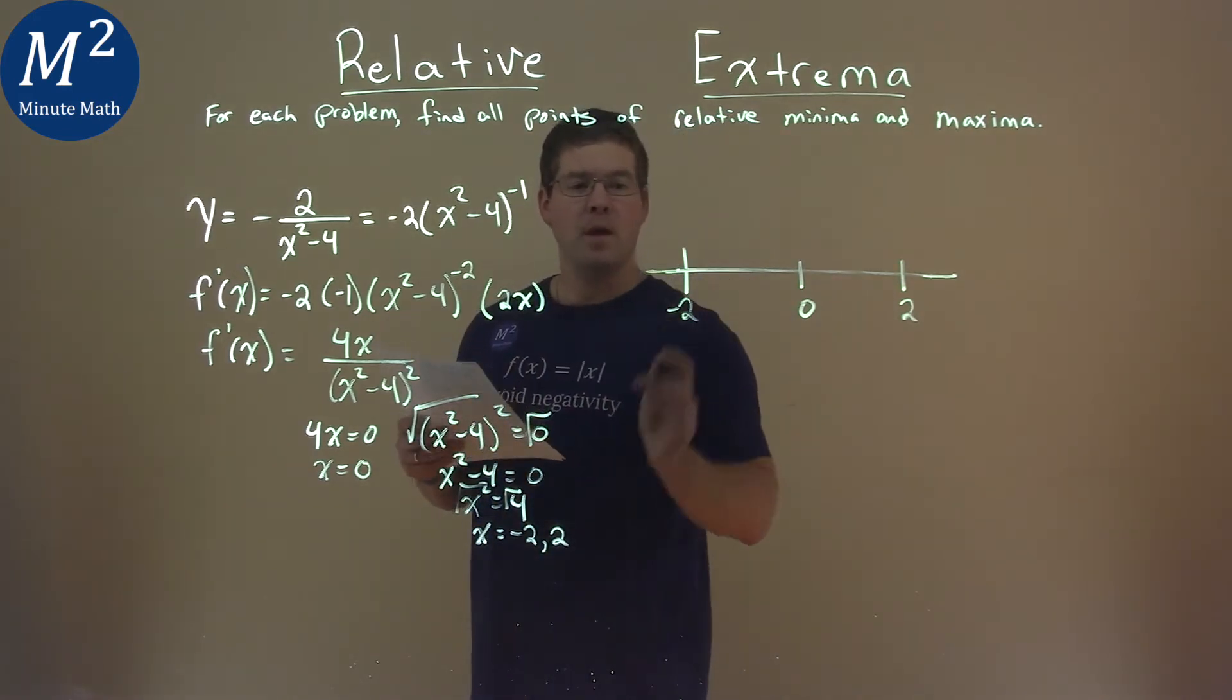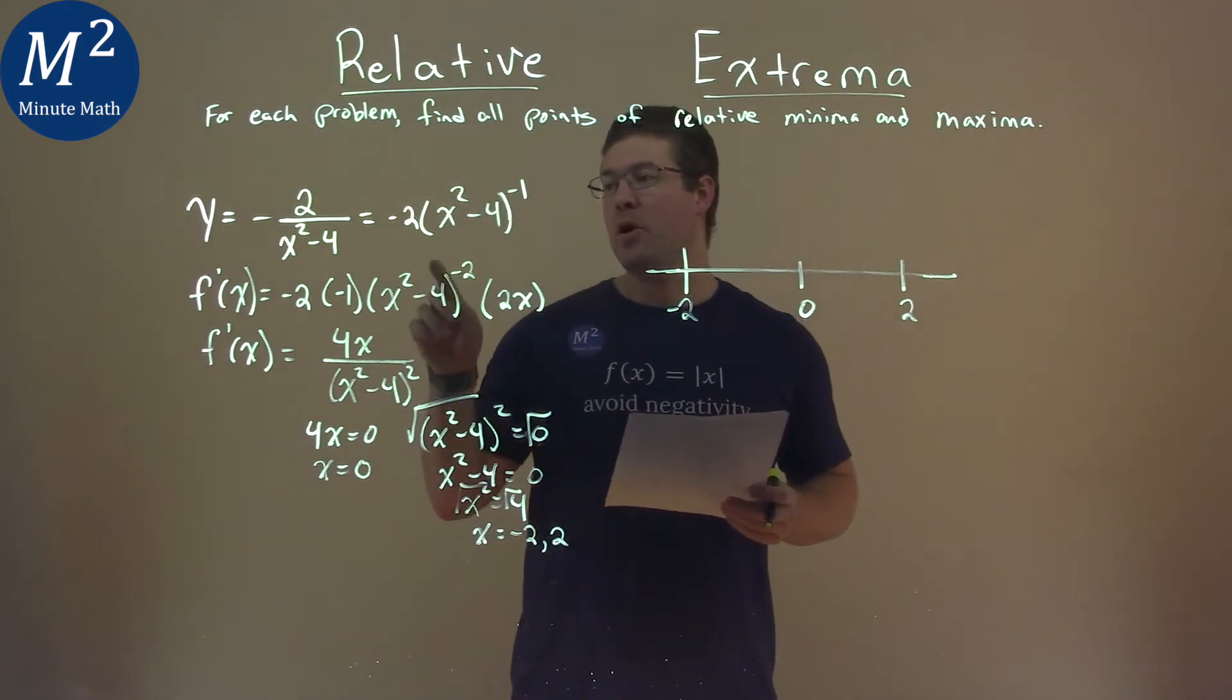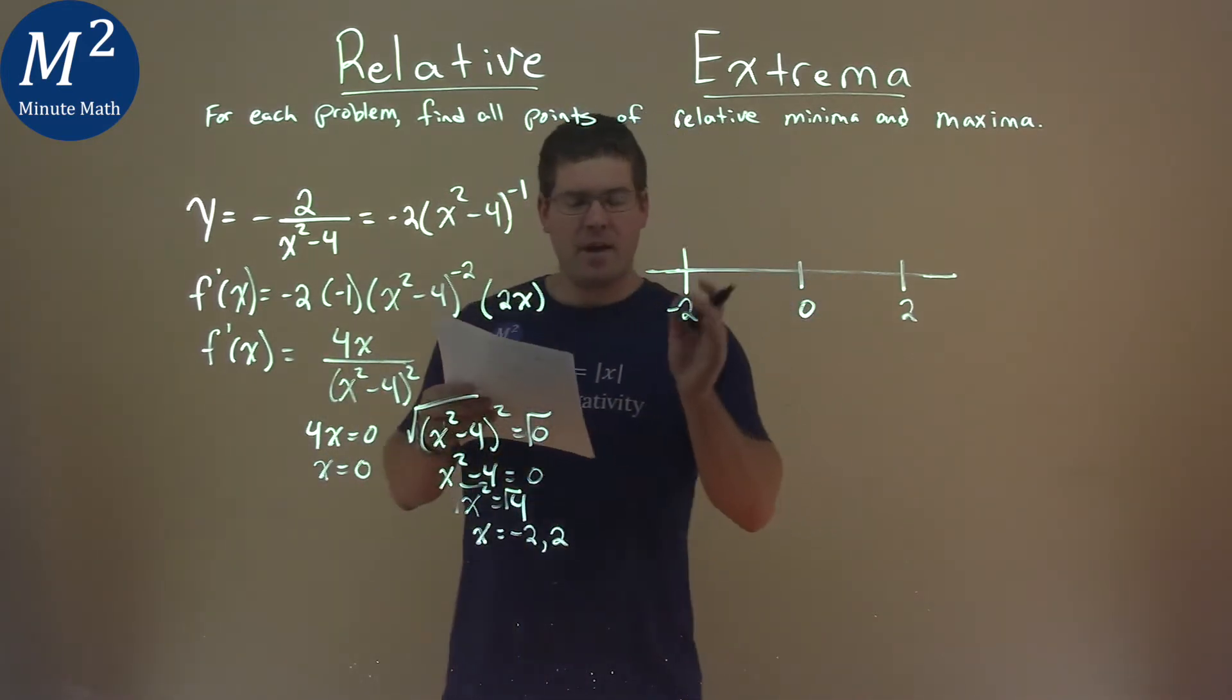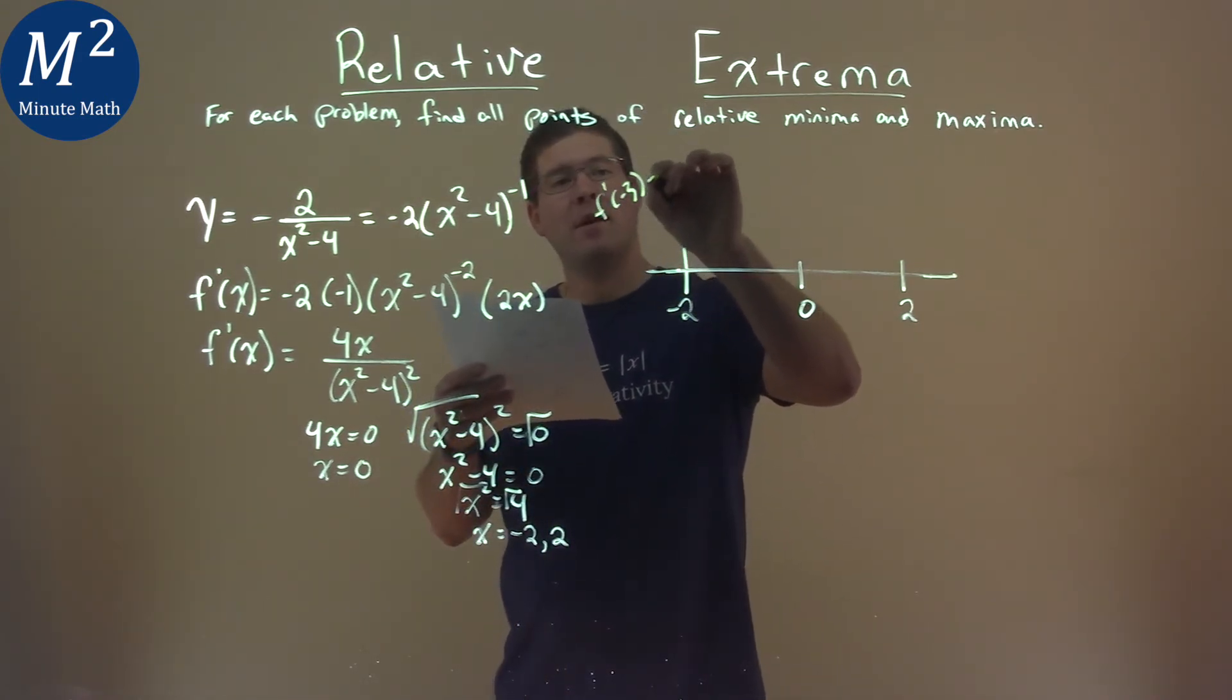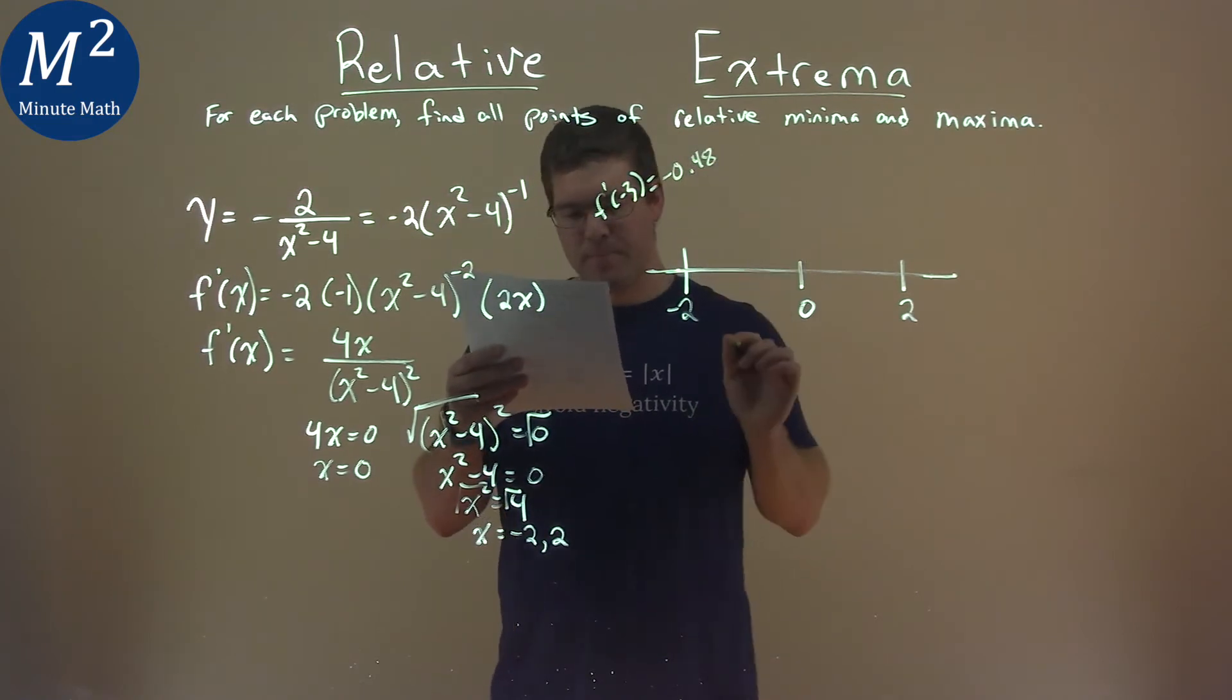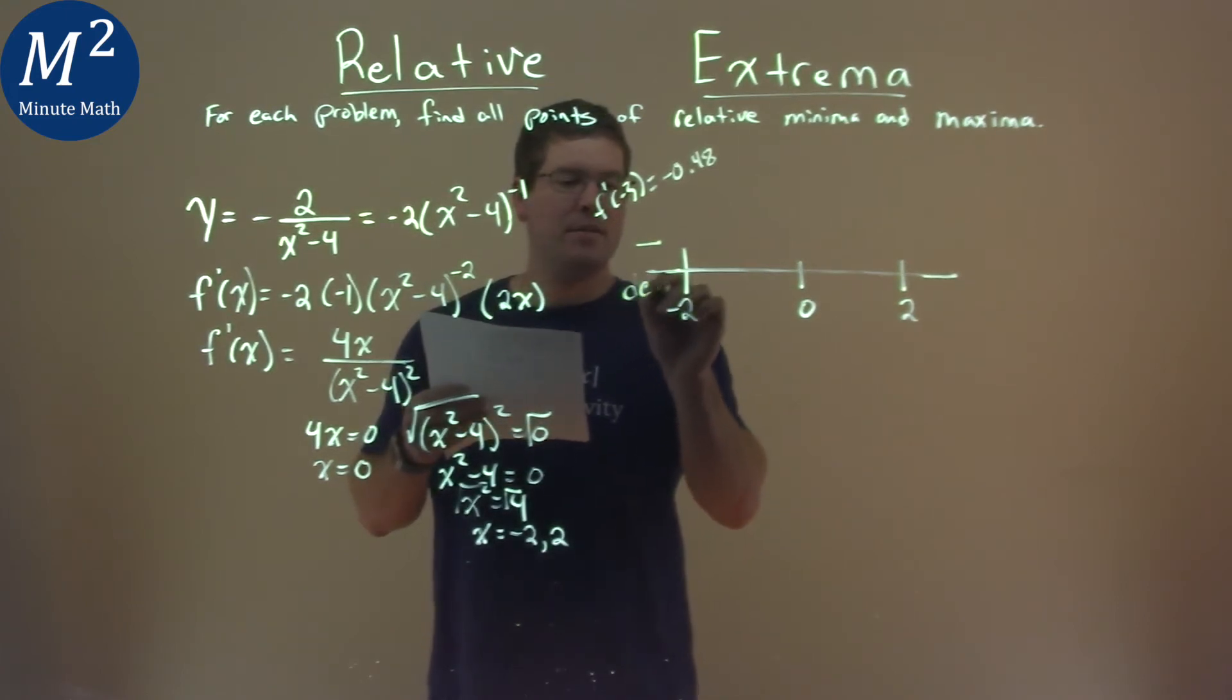Okay, now doing the first derivative test, when we plug values we're plugging them into our derivative right there. So I found a value less than negative 2, and I picked negative 3. So I found f prime of negative 3, and that came out to be negative 0.48. I just care that it's negative, and therefore my function is decreasing there.